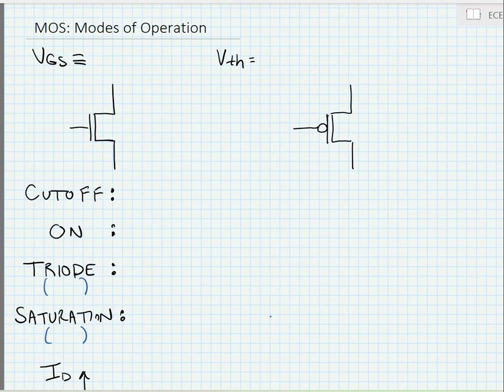Alright, let's look at the modes of operation for MOS transistors. When we look at the modes of operation for MOS transistors, they're defined by their terminal to terminal voltages.